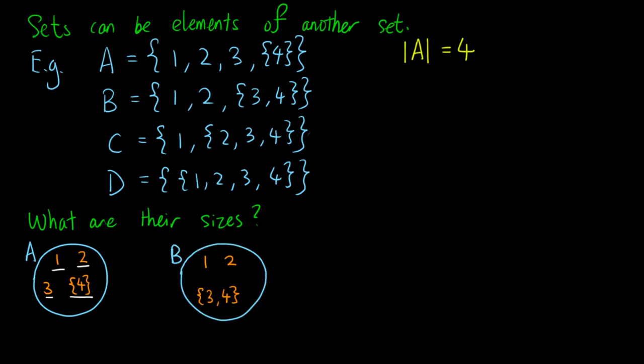Now let's look at B. It contains 1, 2, and some stuff, and that stuff is the set containing 3 and 4. So there are three elements in B, namely 1, 2, and the set containing 3 and 4. Note that we don't really care about the 3 and 4 inside the set — we just need to realise that it is one element of B. The size of B is 3.